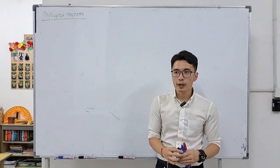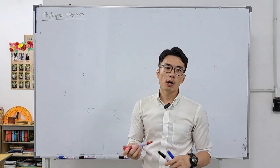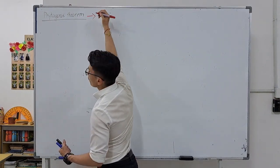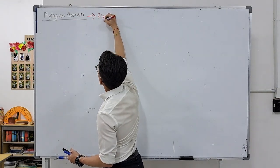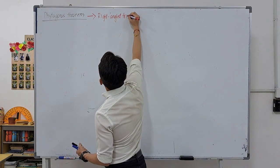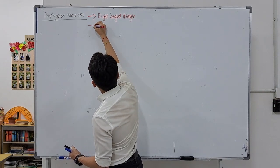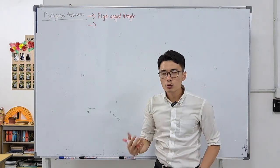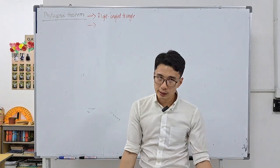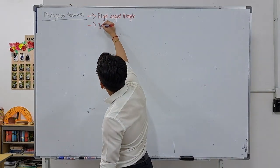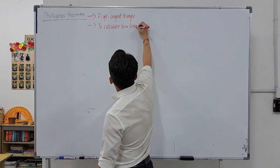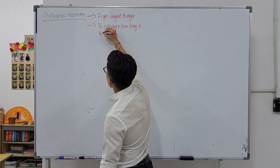When we talk about Pythagoras theorem, we are always talking about a right angle triangle. So when you see the words 'Pythagoras theorem', remember you are dealing with a right angle triangle. The purpose of Pythagoras theorem is to find the sides of the triangle – to calculate how long the sides of the triangle are.